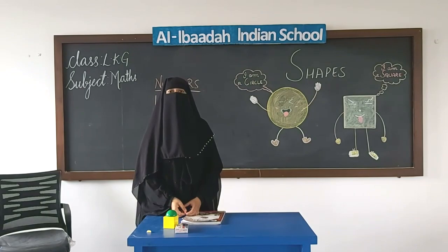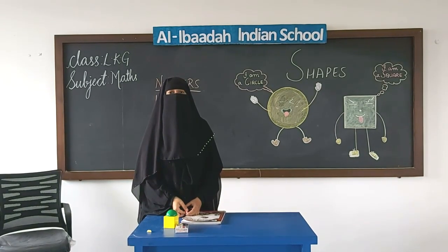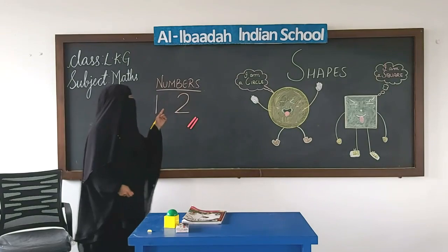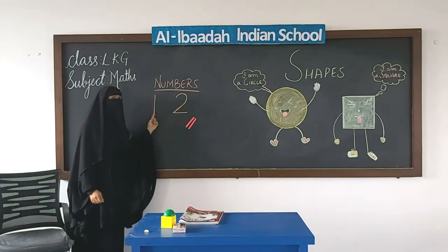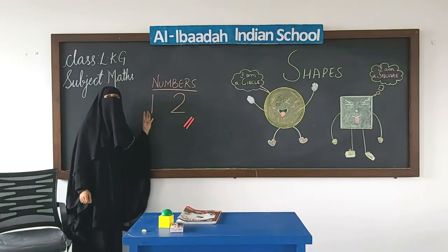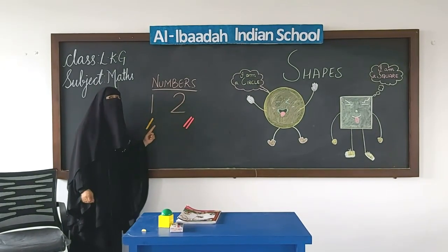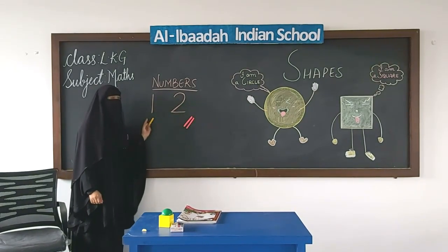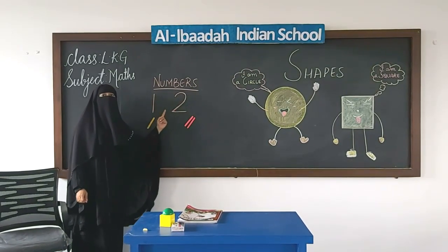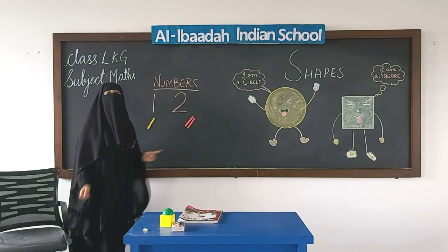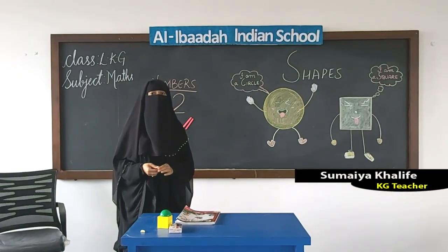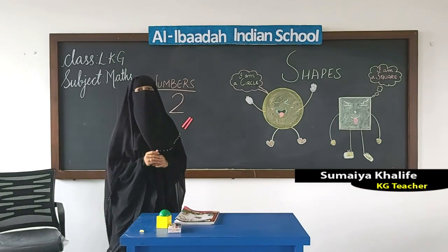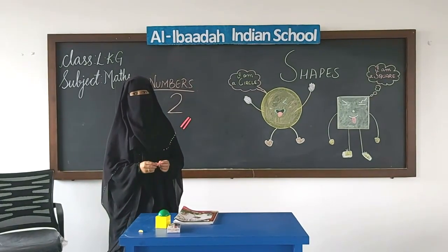Okay, children. I hope you all had fun learning numbers and shapes. And don't forget to do homework in your number book — number 1 and number 2, 3 lines. Daily, I want you to practice 3 lines: number 1 and number 2. So until then, stay safe, children. Jazakumullahu khaira. Assalamualaikum warahmatullahi wabarakatuhu.